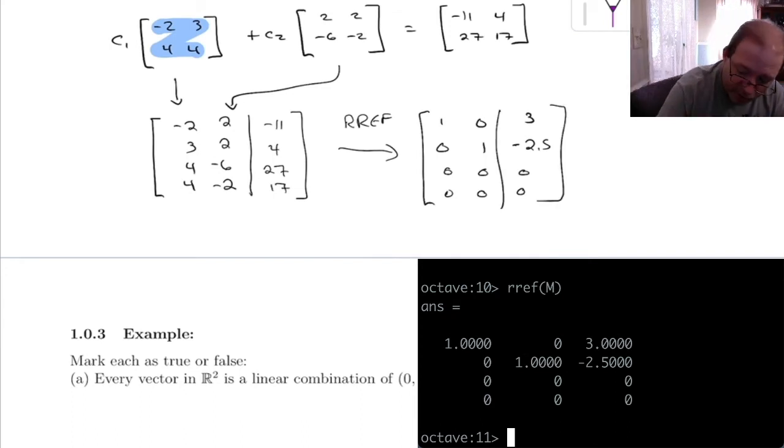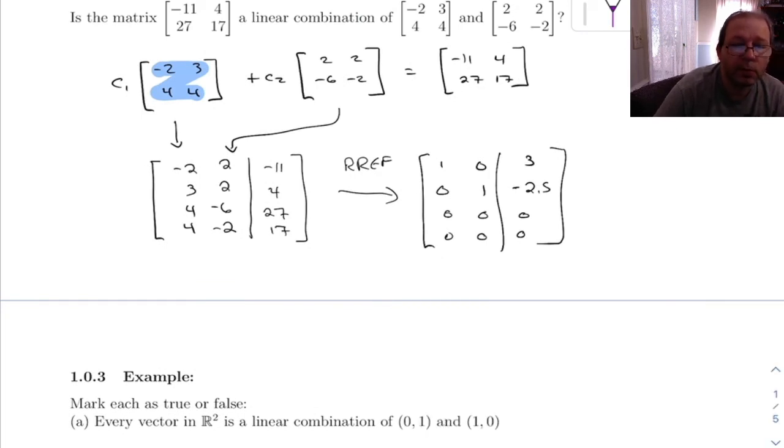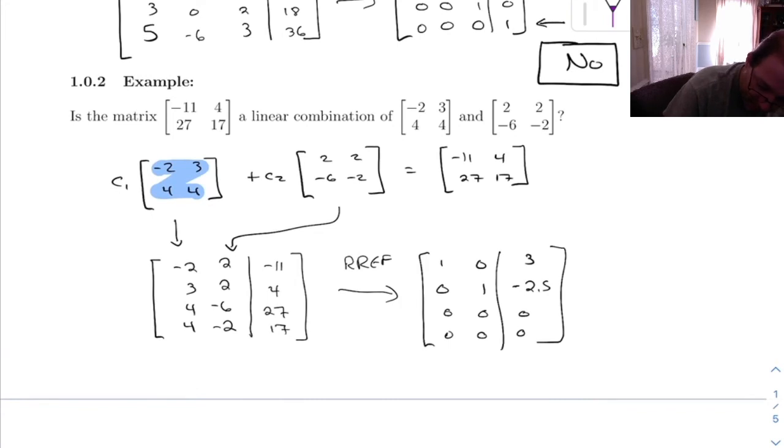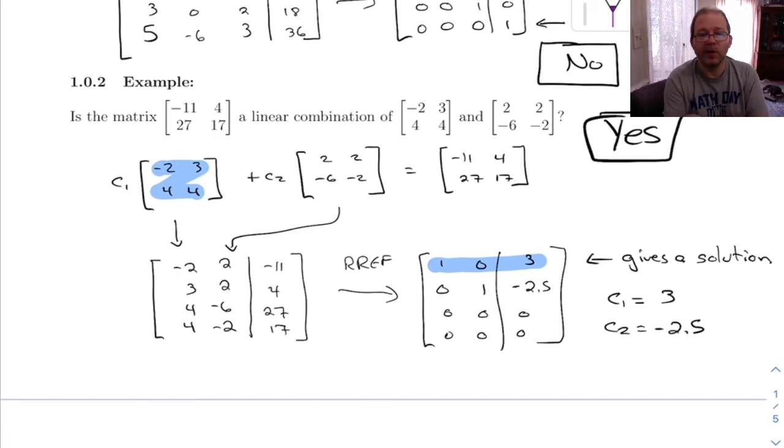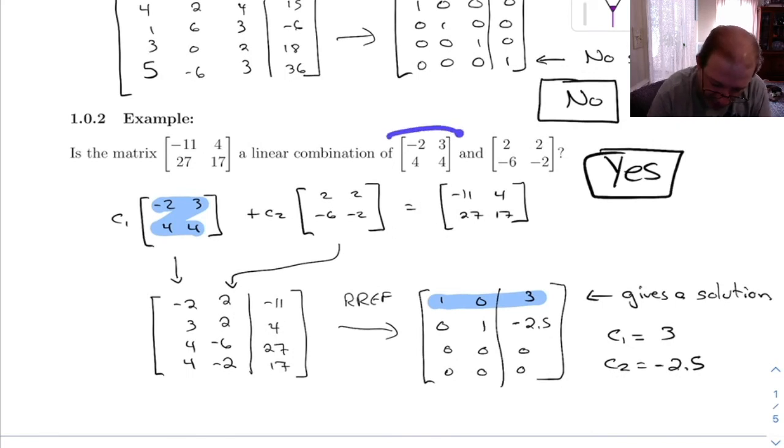So does this give me a solution? Yeah. It gives me a unique solution. So what this says is there's a unique solution. Is this matrix a linear combination of this? The answer to that is yes, because this gives us a solution. Actually, it's not the fact that it's unique, it's just the fact that it gives us a solution. It says C1, remember this top line here tells us C1 is 3, and C2 is -2.5. So if you wanted to, you could go back through there and test that. Multiply this matrix times 3, this one times -2.5, and it would work out to exactly that. Alright, so that's it for this.